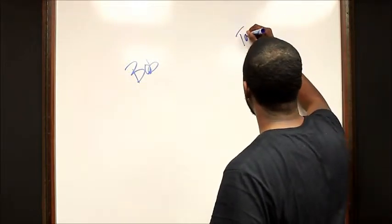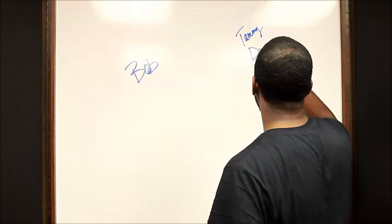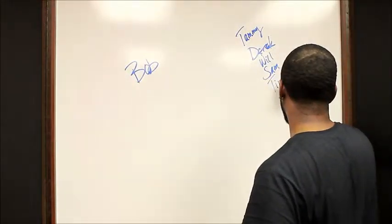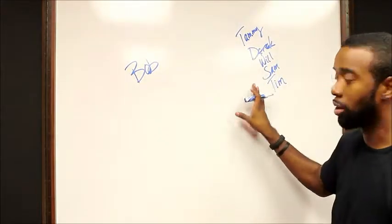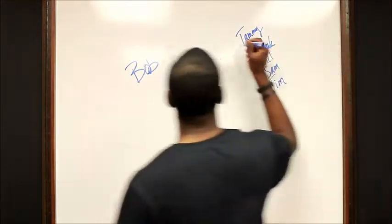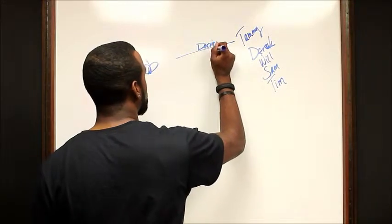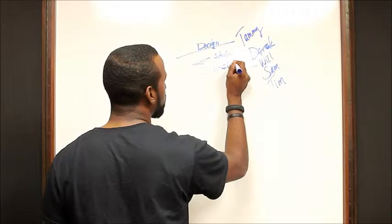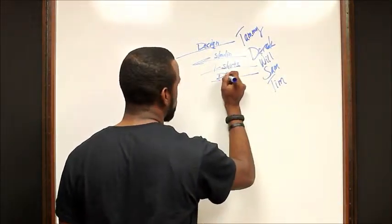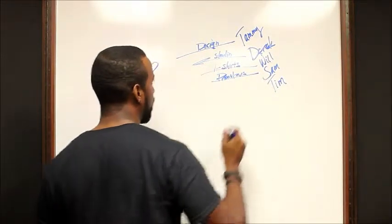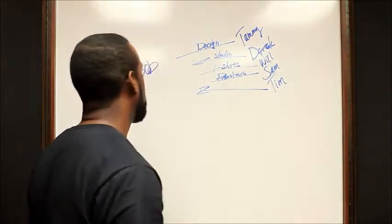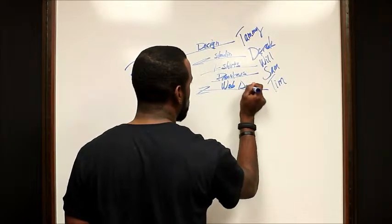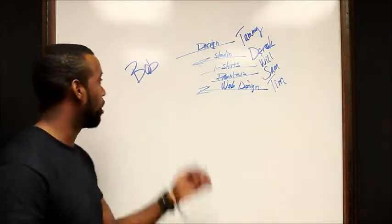So what we got going on here is Bob wants to be involved in the program. We have Tammy, Derek, Will, Sam, and Tim — five individuals already on our affiliate team. What they simply do is teach Bob the information. Tammy teaches him designs, Derek teaches him studio recording, Will teaches about t-shirts, Sam teaches about promotions, and Tim knows how to do web design.